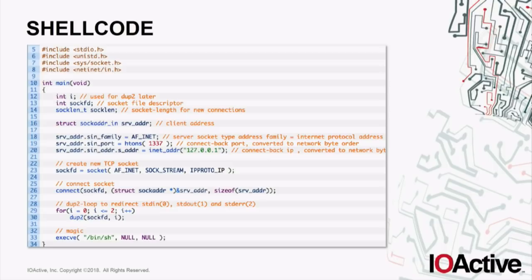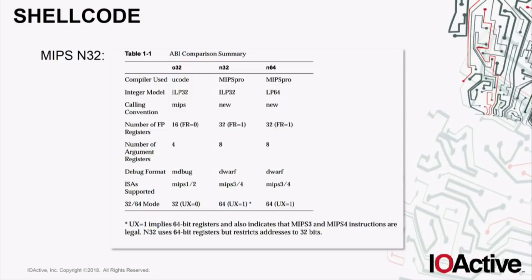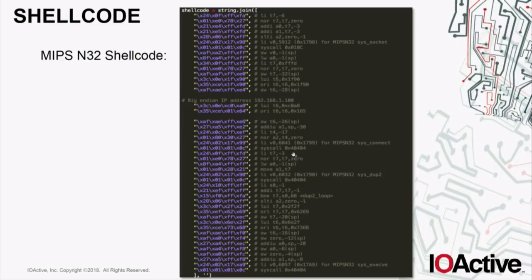For the shellcode, I'm using a standard reverse shell. The issue is that standard MIPS shellcodes from the internet — even from Metasploit or Exploit Database — won't work in this system. This is mainly because it's MIPS N32, which has some particularities: it uses 64-bit registers but 32-bit memory addresses, and different syscall codes. It's not a big deal — just open libc, check the syscall codes for each API your shellcode is calling. For instance, the socket function has its own specific syscall code in MIPS N32. Then you get a working MIPS N32 shellcode, which by the way is big endian.